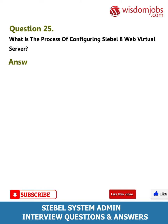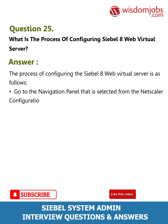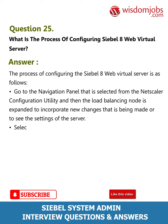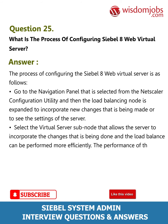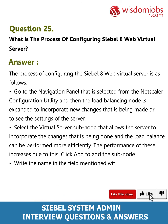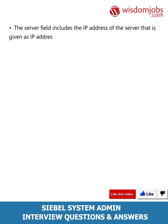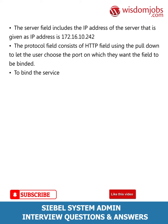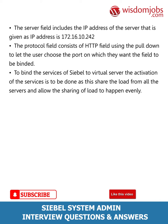Question 25: What is the process of configuring Siebel 8 web virtual server? Answer: Go to the navigation panel selected from the NetScaler configuration utility, then expand the load balancing node. Select the virtual server sub-node to incorporate changes. Click Add to add the sub-node, write the name in the field such as name=_http_80. The server field includes the IP address such as 172.16.10.242. The protocol field consists of HTTP, using the pulldown to choose the port. Bind the services of Siebel to the virtual server to share the load from all servers evenly.